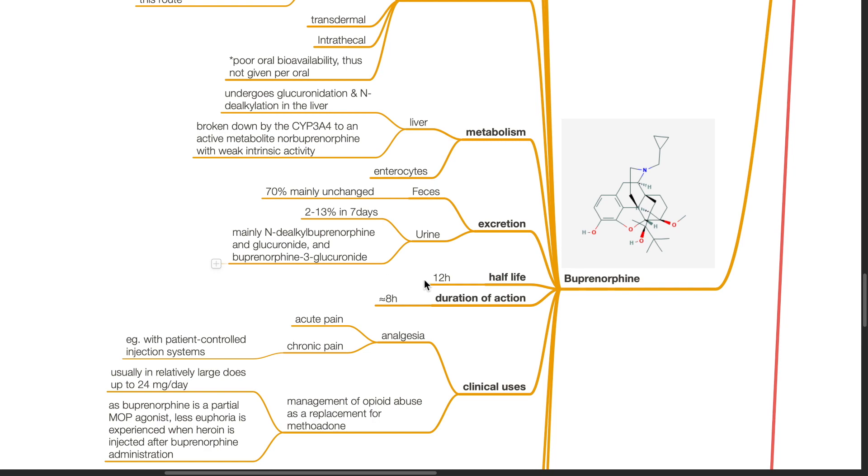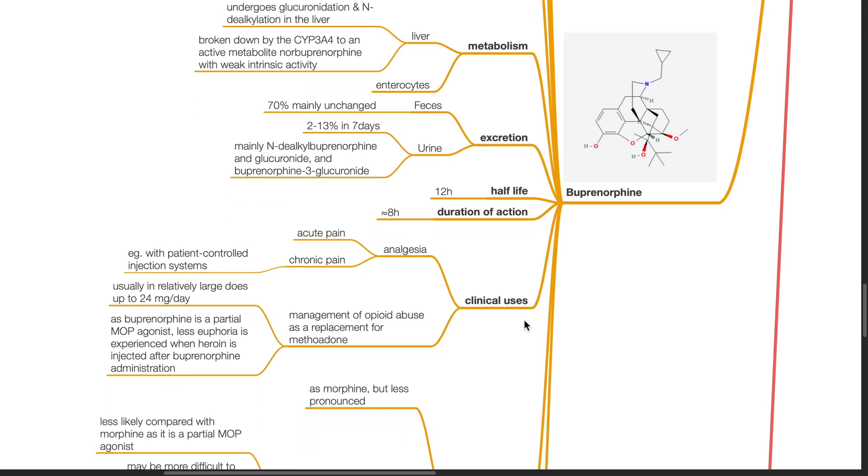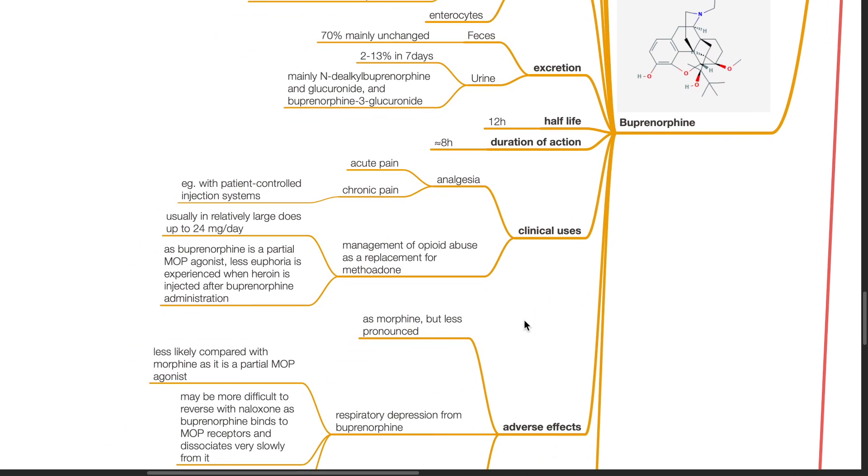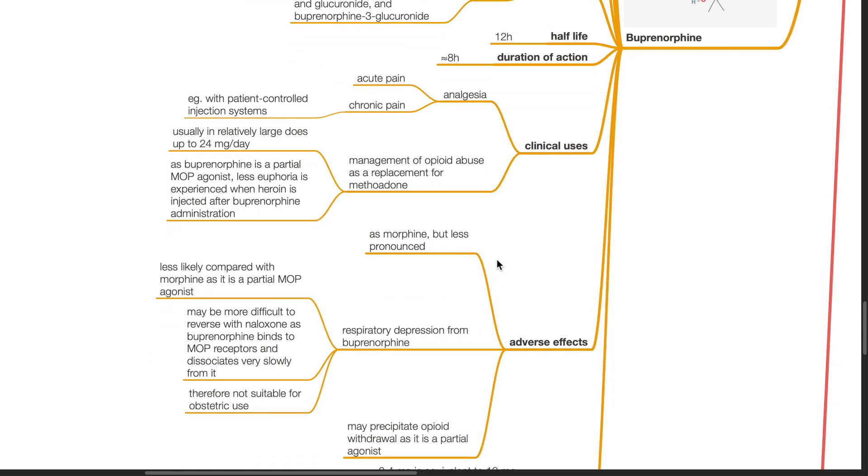Half-life is 12 hours. Duration of action about 8 hours. Clinical uses: it is used to treat acute and chronic pain. It is used for management of opioid abuse as a replacement for methadone, usually in relatively large doses up to 24mg per day. Buprenorphine is a partial MOP agonist. Less euphoria is experienced when heroin is injected after buprenorphine administration.